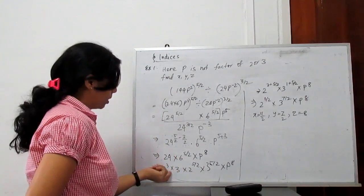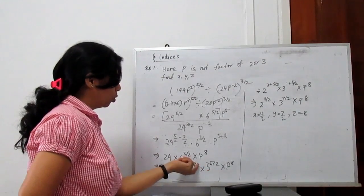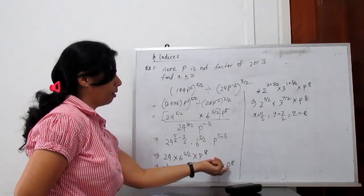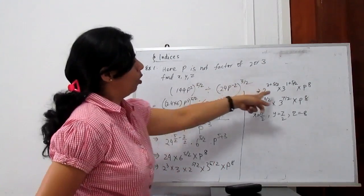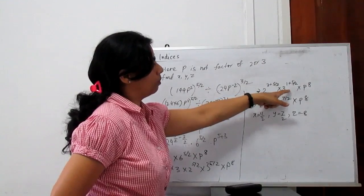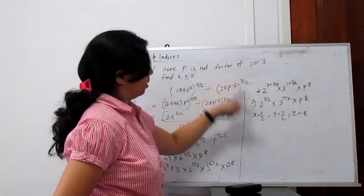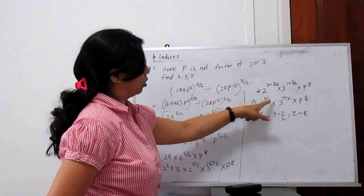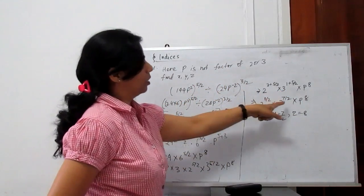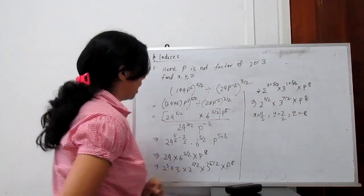So we get 2 to the power 3 times 3 for 24, and 2 times 3 for 6, giving 2 to the power 5 by 2 times 3 to the power something times p to the power 8. Collecting all powers of 2 together, all powers of 3 together, and all powers of p together.